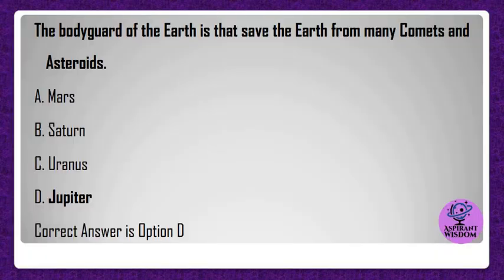The bodyguard of the earth that saves it from many comets and asteroids is? A) Mars, B) Saturn, C) Uranus, D) Jupiter. Correct answer is option D.